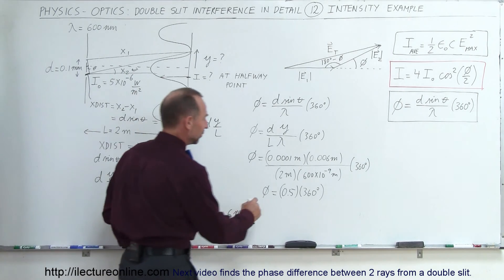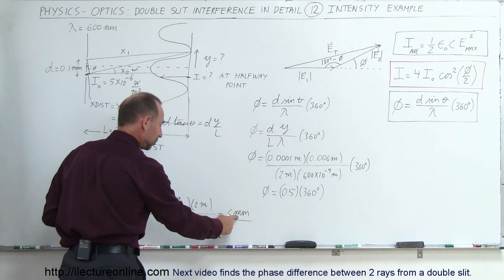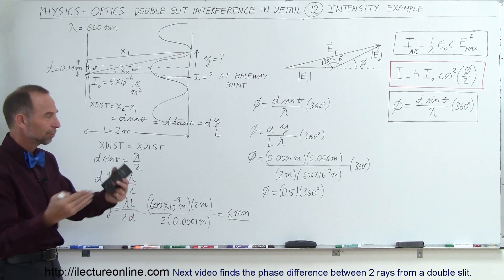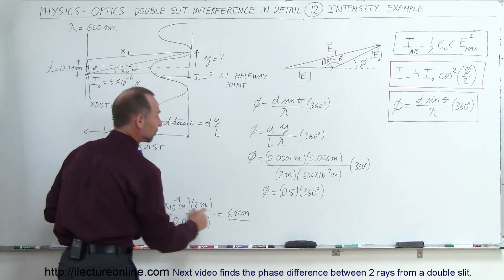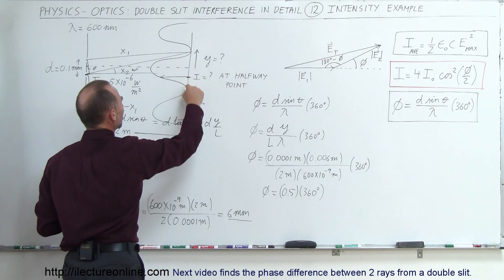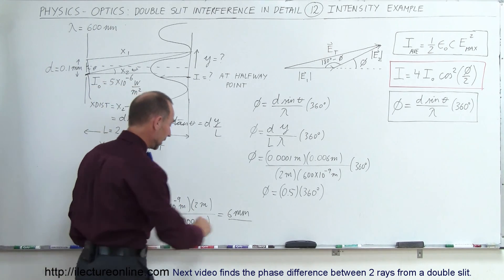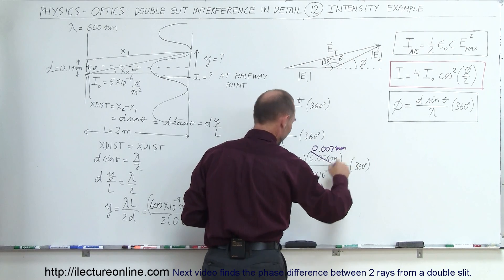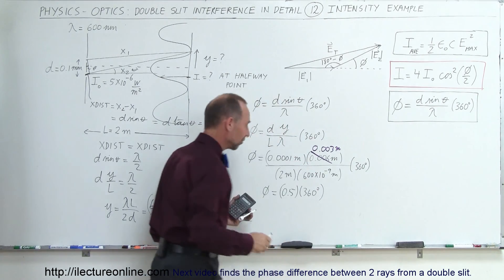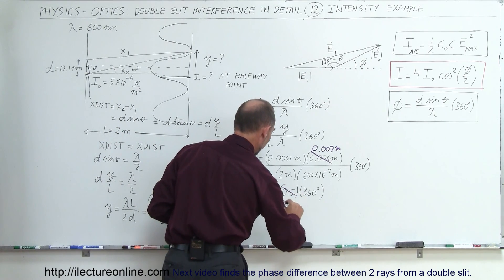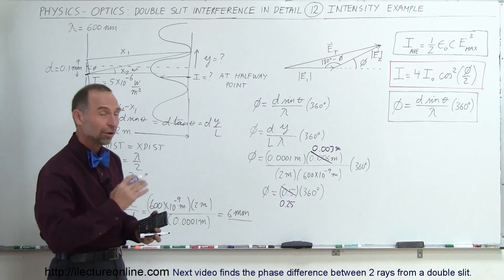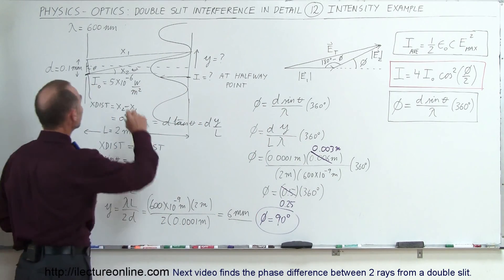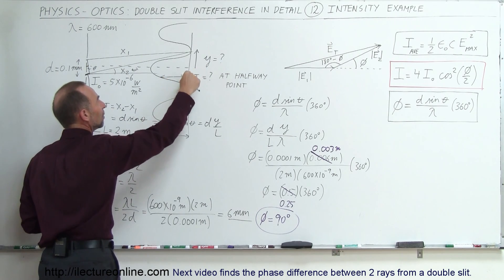Remember, I plugged in the distance 6 millimeters, which is the distance to the first minimum, which ended up being half of 360 degrees, or 180 degrees — complete destructive interference — and that's of course correct when we use 6 millimeters. But I'm supposed to find it to the halfway point. The halfway point means 3 millimeters. So replacing 6 millimeters with 3 millimeters, this comes out to 0.25 times 360 degrees, which is a quarter of 360 degrees, meaning the phase difference is 90 degrees — that's the phase difference when the two beams get to the halfway point between the central maximum and the first minimum.